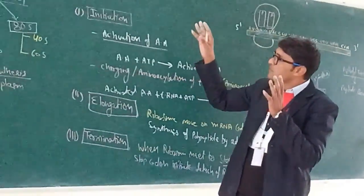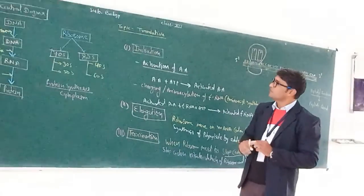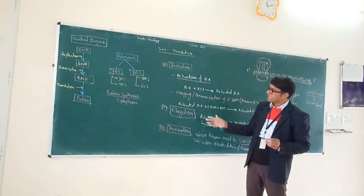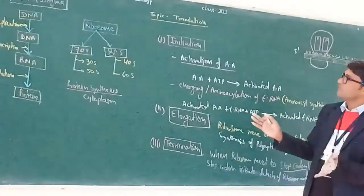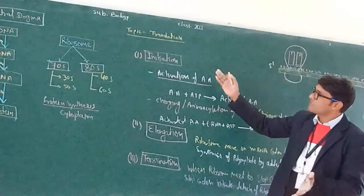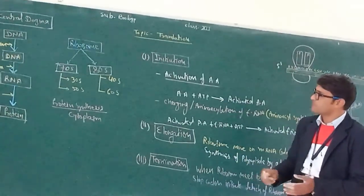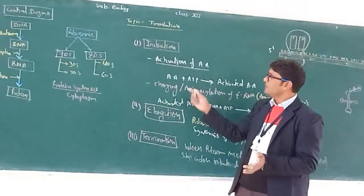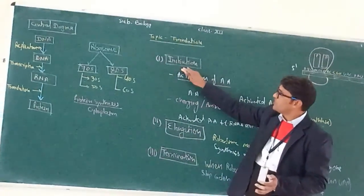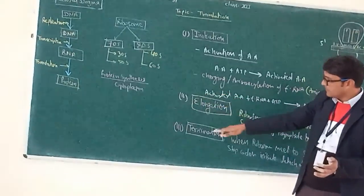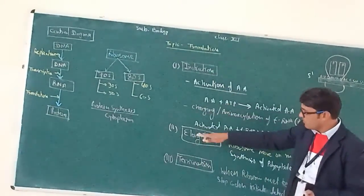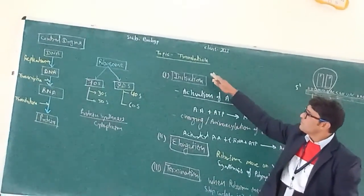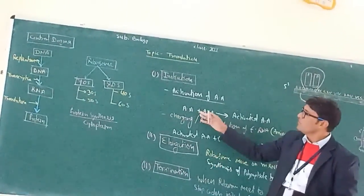Translation is completed within three steps. We will discuss translation in three steps. First of all, we discuss initiation, after that elongation, and after that termination. So initiation, elongation, and termination are the three steps by which the translation process is completed in the cytoplasm.